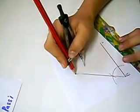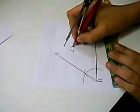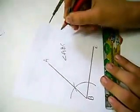And we will name this point A. Now we can say that angle ABC is equal to 60 degrees. Thank you.